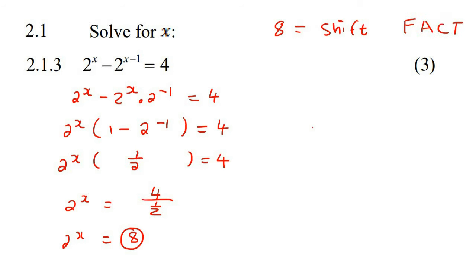On your calculator, 8 is the same as 2 to the power of 3. So we could say 2 to the power of x is the same as 2 to the power of 3. Now when these are the same, you can cancel them, and so x would simply be equal to 3.